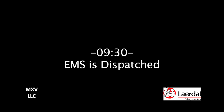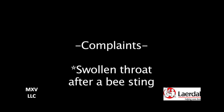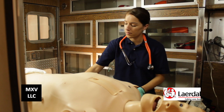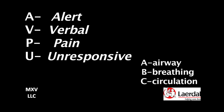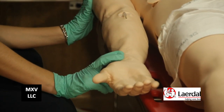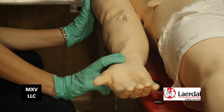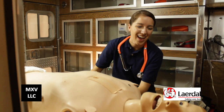At 0930, EMS is dispatched to a 20-year-old male feeling like his throat is swelling after a bee sting. Upon arriving at the scene, the paramedic does a quick scan to ensure there is no danger, noting that the patient is scratching his arm. She introduces herself to the patient in order to assess AVPU and ABCs, placing one hand on his shoulder to comfort him and the other on his wrist to complete a rapid radial pulse check. She also notices the patient's skin is flushed and clammy.